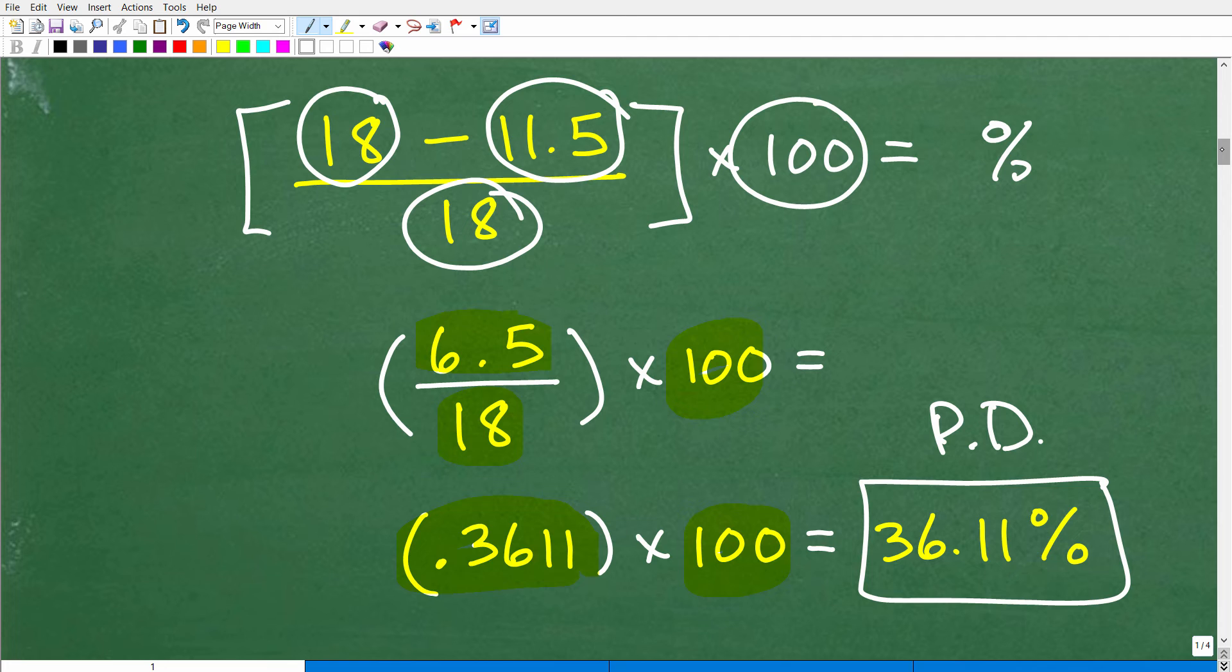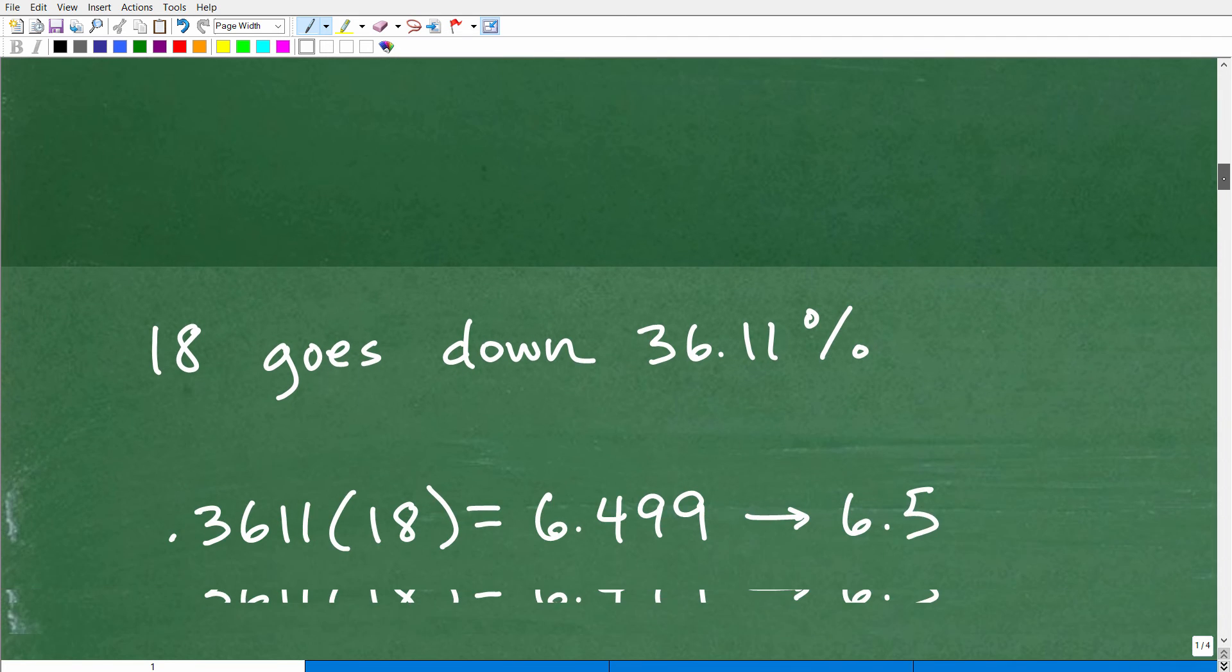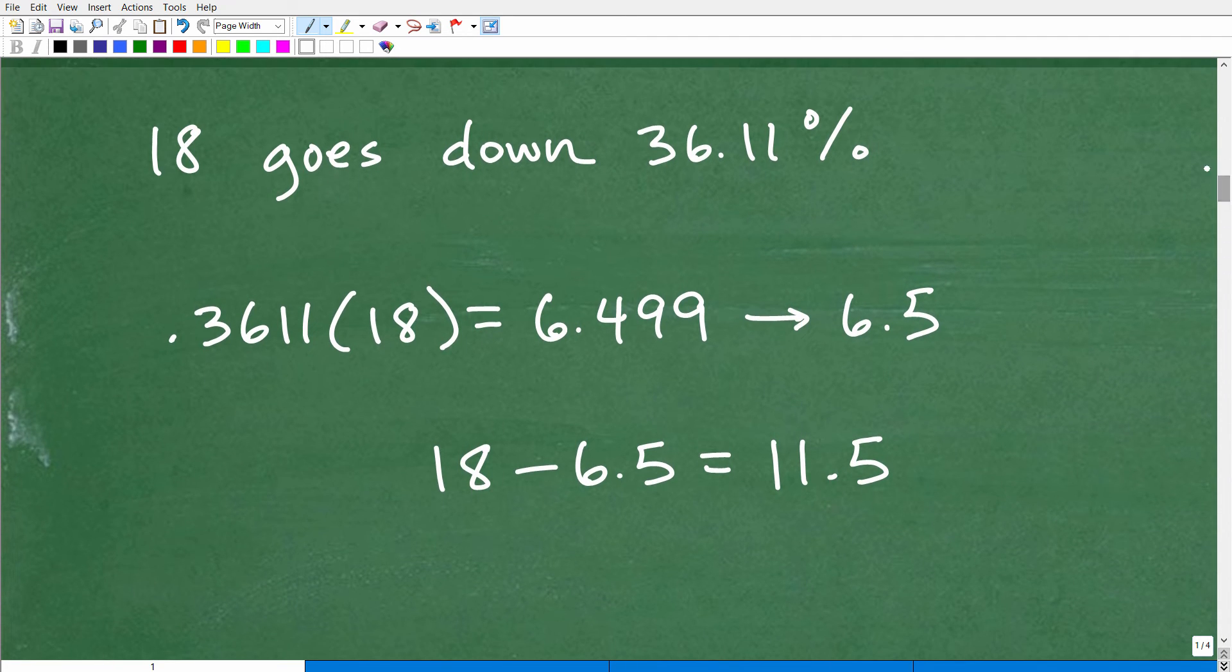So this is our percent of decrease, 36.11%. So let's go ahead and check this work. If 18 goes down, now notice the words I'm using here. If 18 goes down, that's a decrease, right? So this would be something like, hey, your pay is going to go down from $18, and your employer is thinking about, hey, we're going to drop your pay down 36.11%. What's going to be your new pay? Well, we want to calculate this percent of decrease. So how would we do this? Well, we need to find 36.11% of 18, right? So how do we find a percent of a number?